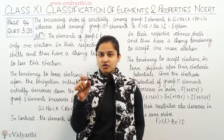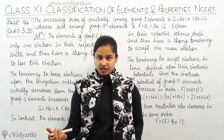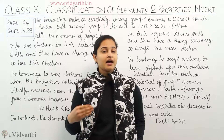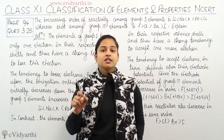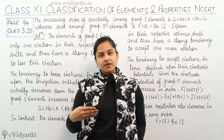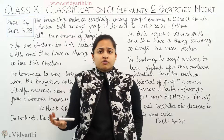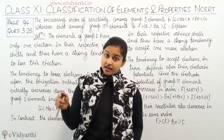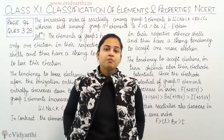So the one valence electron, as we go down the group, will be more easily removed. When we move down the group, atomic size increases, ionization enthalpy decreases, and the electron in the valence shell is removed much more easily. So the ionization energy decreases, and therefore the reactivity down the group increases.